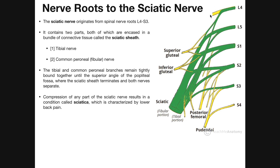The sciatic nerve originates from spinal nerve roots L4 to S3, highlighted in green. Because it gets so much contribution from these nerves, it ends up being very large and very thick. It actually has two portions: a fibular portion and a tibial portion. The tibial portion becomes the tibial nerve, and the fibular portion becomes the common fibular nerve, sometimes called the common peroneal nerve. Fibular and peroneal are synonymous — they mean exactly the same thing and are used interchangeably.